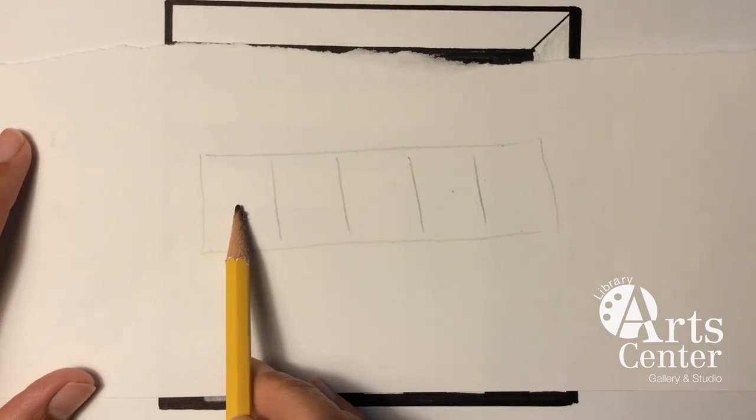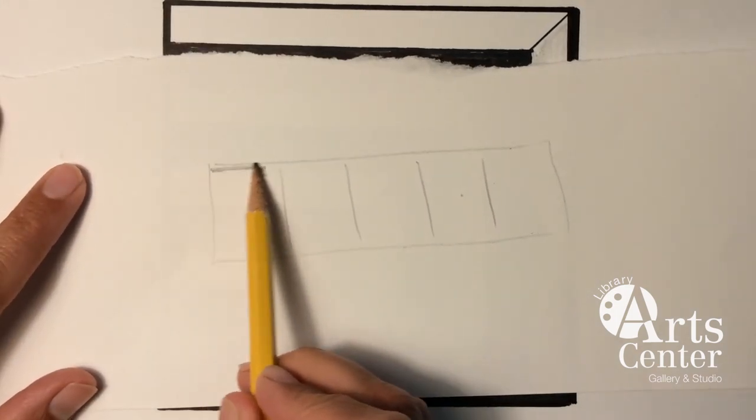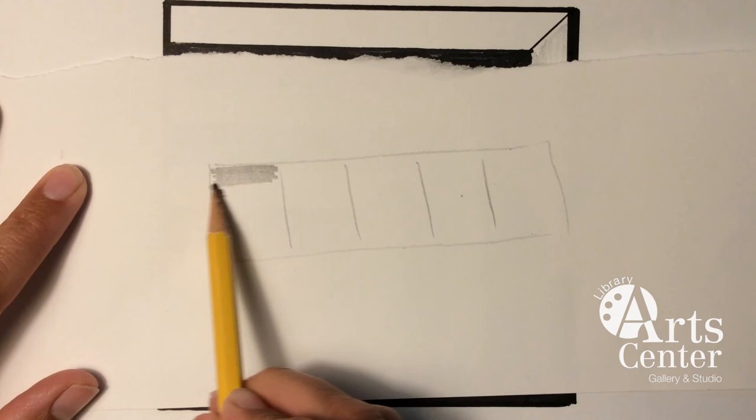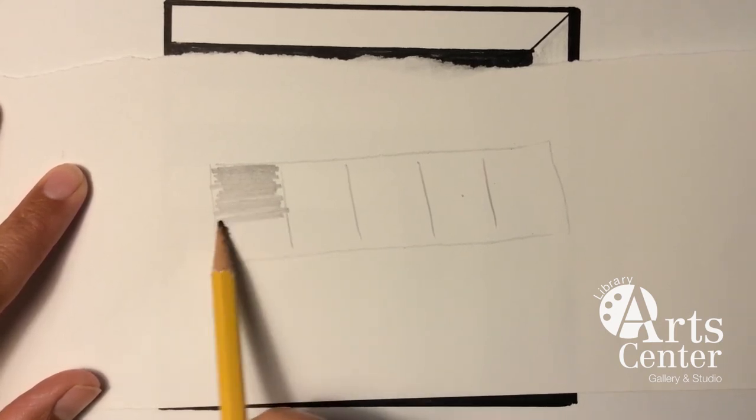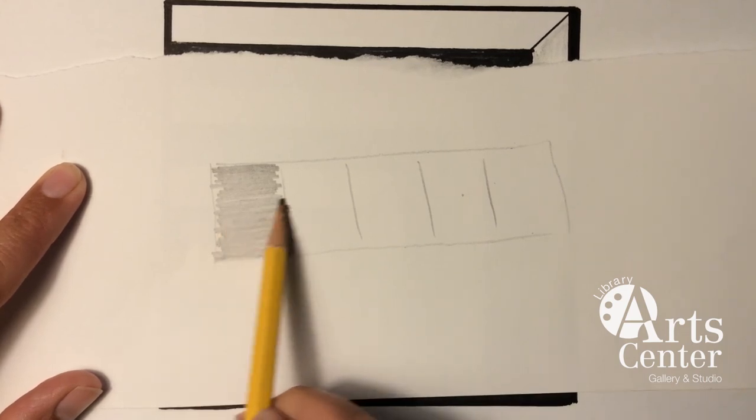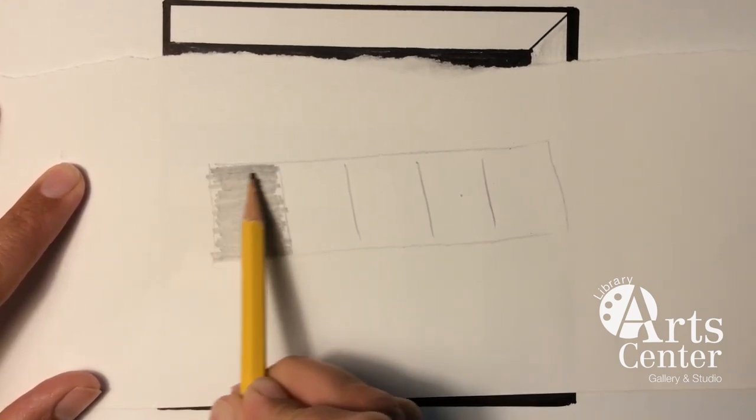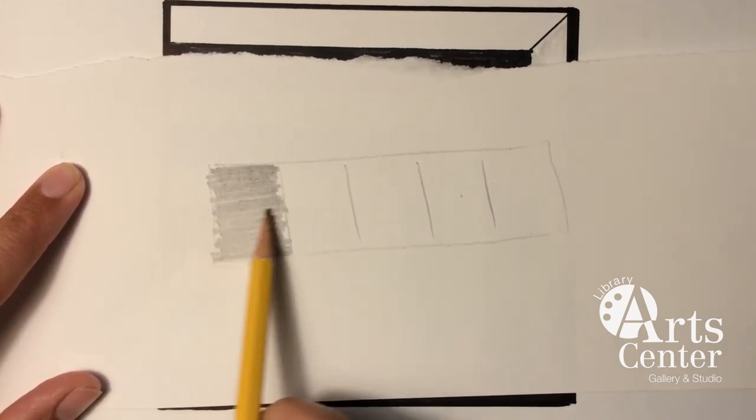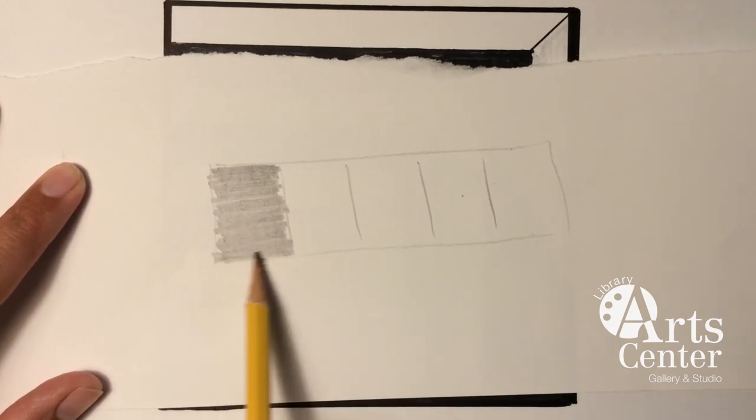Starting on the left hand side, I want you to try to make the darkest value possible with your pencil by coloring in one direction and pushing down really hard. We can create a darker value with our pencil.